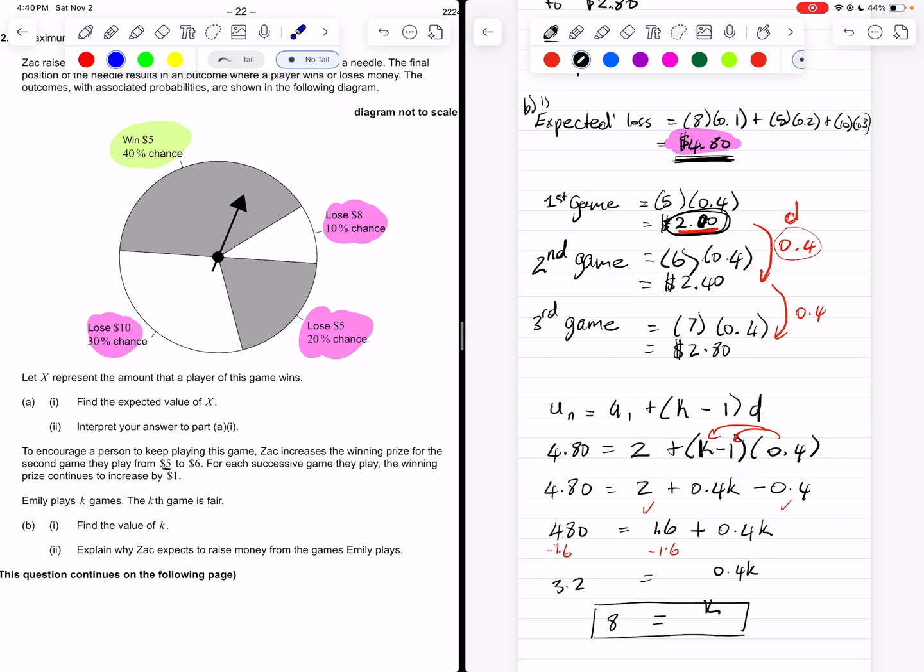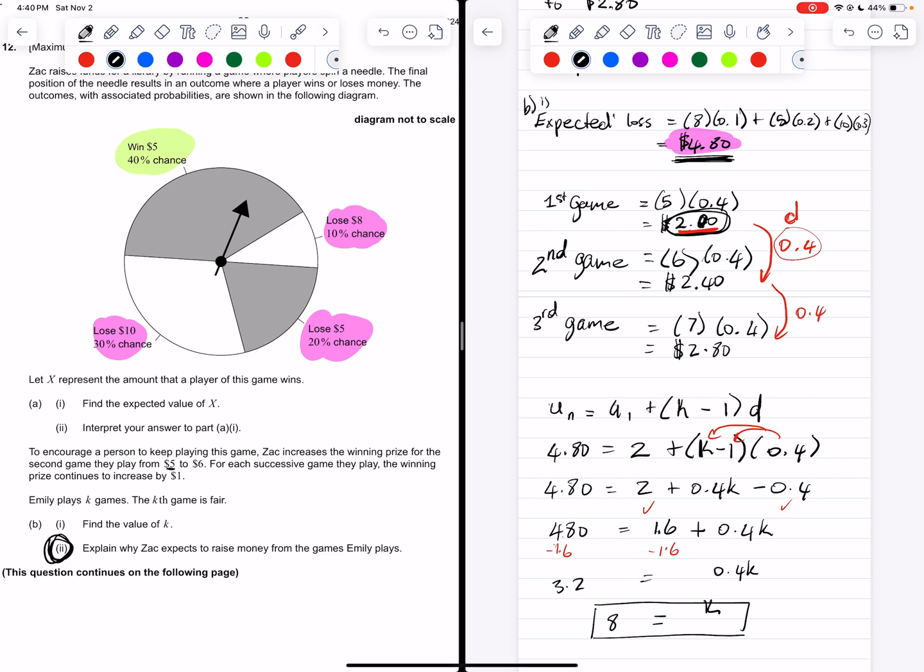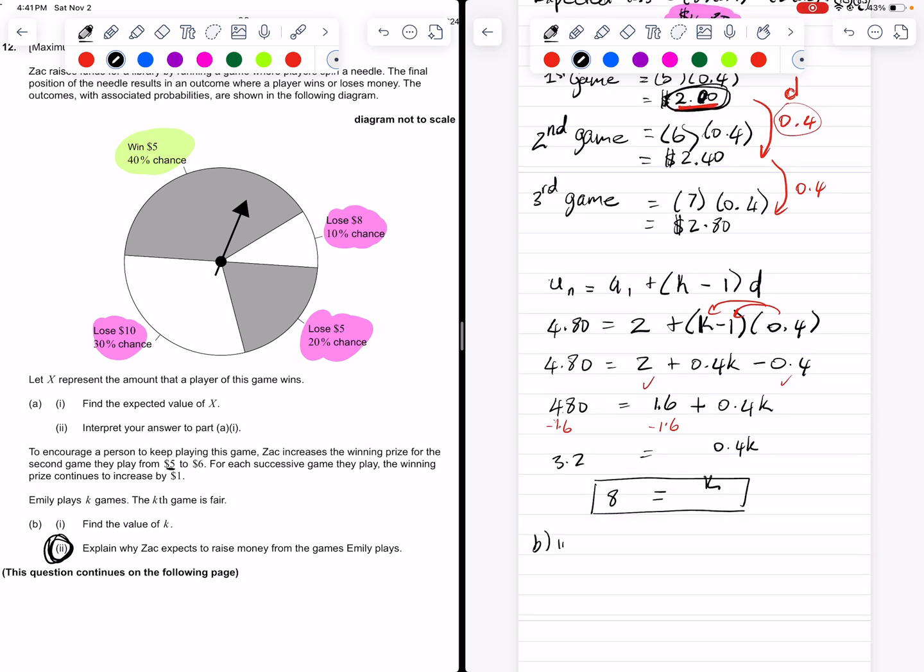So our final question in this number 12, our final question is saying, Explain why Zach expects to raise money from the games Emily plays. What does that even mean? Why does he expect to raise money from the games Emily plays? Well, remember that even though that 8th game was fair, meaning there was no average gain or loss, there were 7 games before that, where there was a loss, which means that because of those 7 games before that, he will make money. So let's write that down. Even though the 8th game was fair, the 7 games before were not.